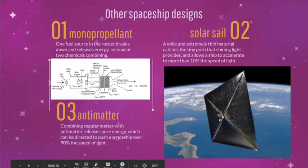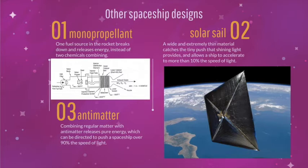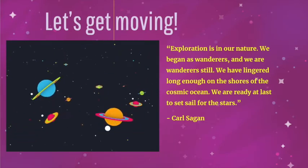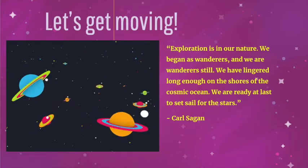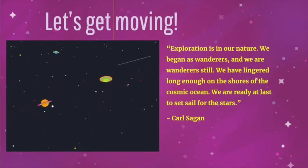Antimatter is the most amazing of all possible rocket fuels because it releases enormous amounts of energy, which could get a spaceship to 90 percent the speed of light or faster. That's where we would actually be able to travel extremely long distances through space. As you go to those high speeds, time would slow down for you thanks to Einstein's theory of relativity, meaning in your lifetime you could travel to other stars or possibly even other galaxies. As Carl Sagan said: 'Exploration is in our nature. We began as wanderers and we are wanderers still. We have lingered long enough on the shores of the cosmic ocean. We are ready at last to set sail for the stars.'